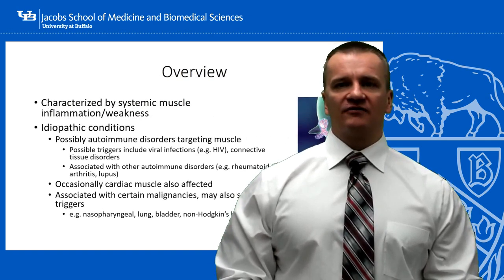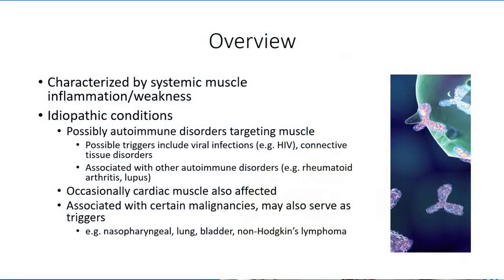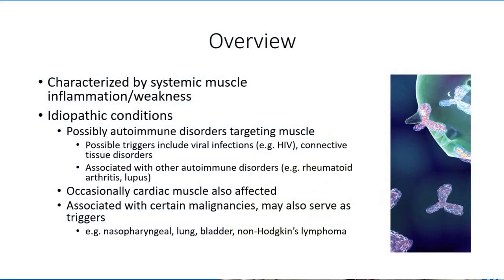The common thread for each of the inflammatory myopathies is a disease condition characterized by muscle weakness. Typically, it appears sometime in adulthood, in which muscle tissue inflammation is noted upon muscle biopsy. Although a few precipitating factors have been identified in patients with an inflammatory myopathy, the disease condition itself is relatively rare, and a specific cause, if one exists, has not been identified.